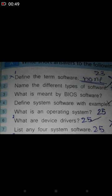Number three: what is meant by BIOS software? Basic Input Output Software. This is also on page number 24. Number four: define system software with examples. System software with examples is on page number 24.